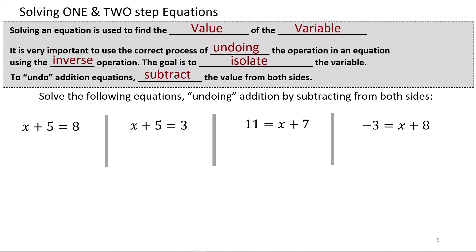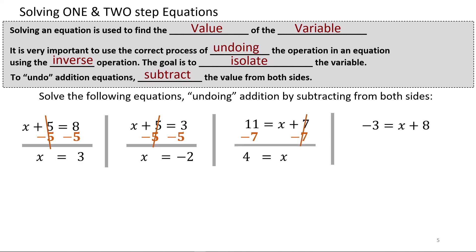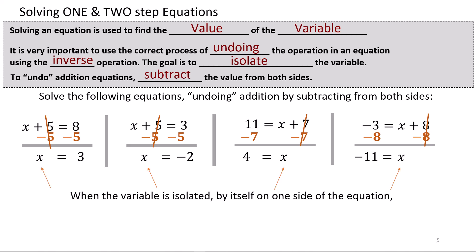In the first example, plus 5 is undone using the inverse operation of minus 5 from both sides. We cancel, which leaves x equals 3. In the second one, we undo the 5 by subtracting 5 from both sides, getting x equals negative 2. In the third, we undo plus 7 by subtracting 7 from both sides, and 4 equals x. Here we subtract 8 from both sides, which leaves negative 11 equal to x. When the variable is isolated on one side with its value on the other, the equation has been solved.